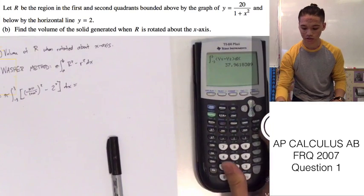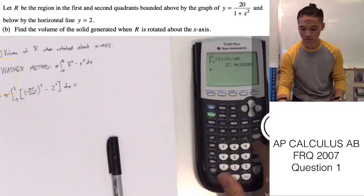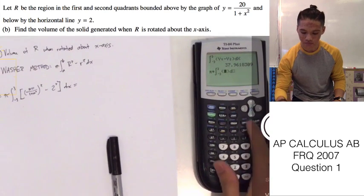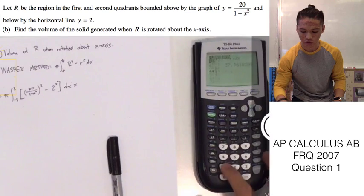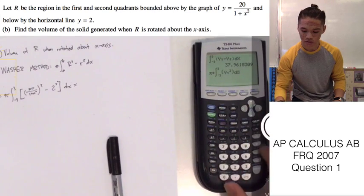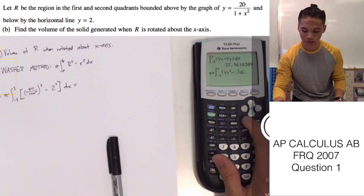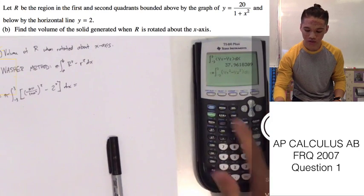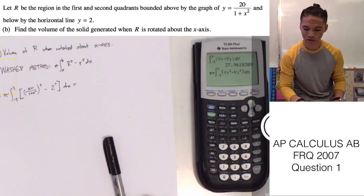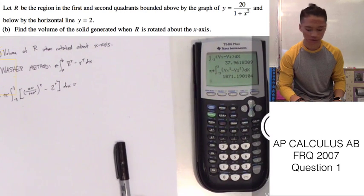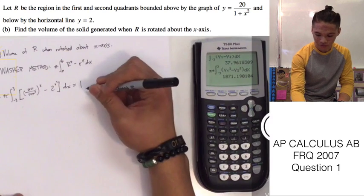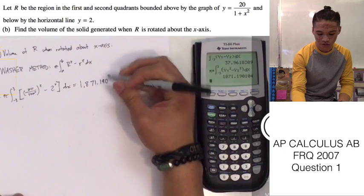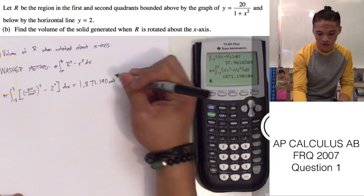If we go ahead and plug this into the calculator, pi times the integral from negative 3 to 3 of our y sub 1 squared minus our y sub 2 squared, with respects to x, of course. So, let that load.